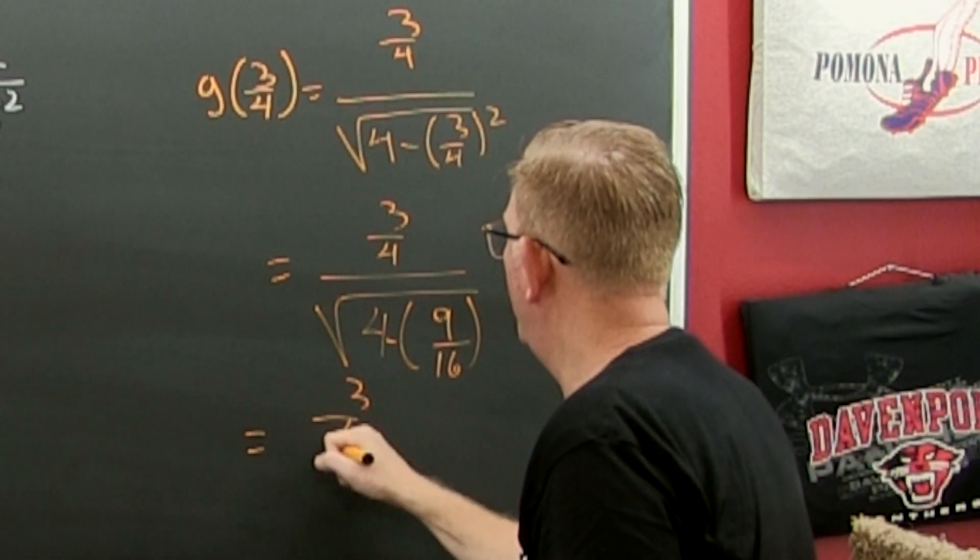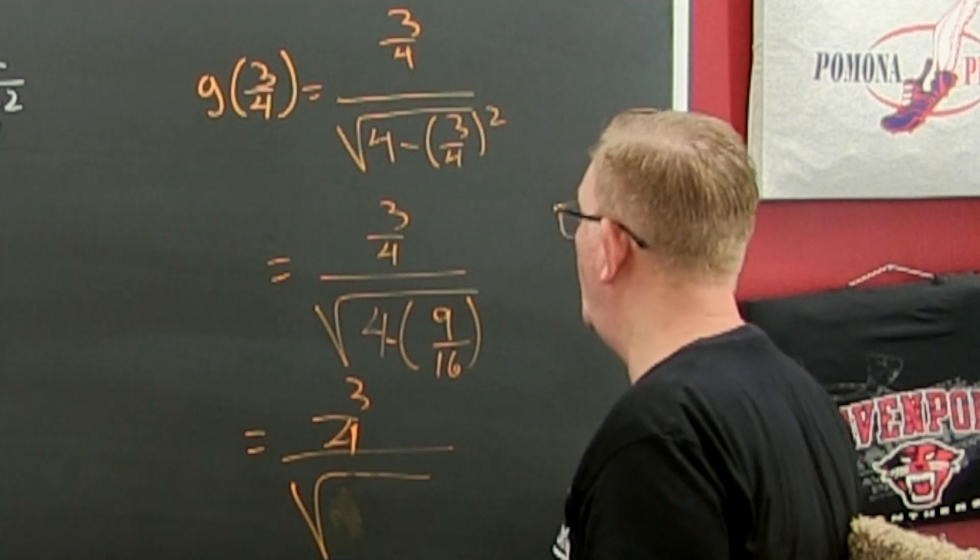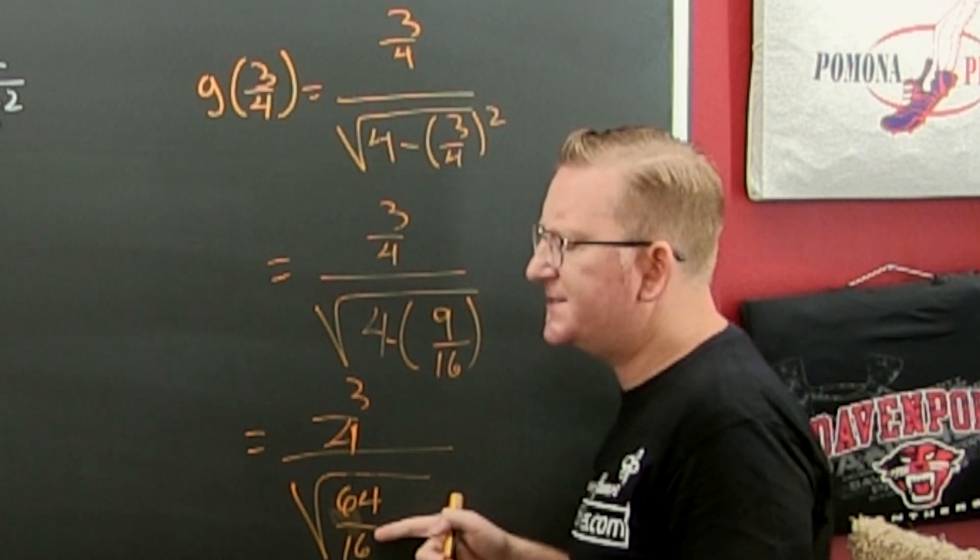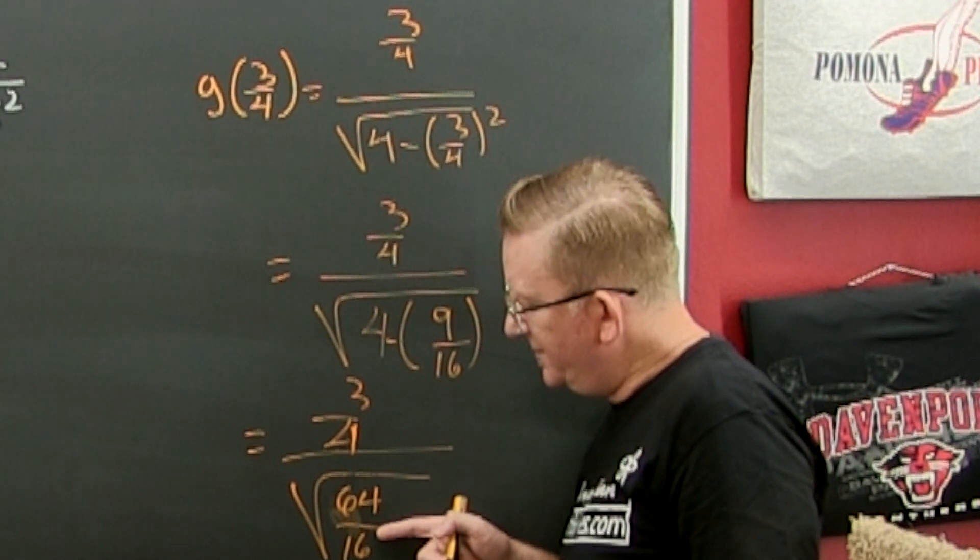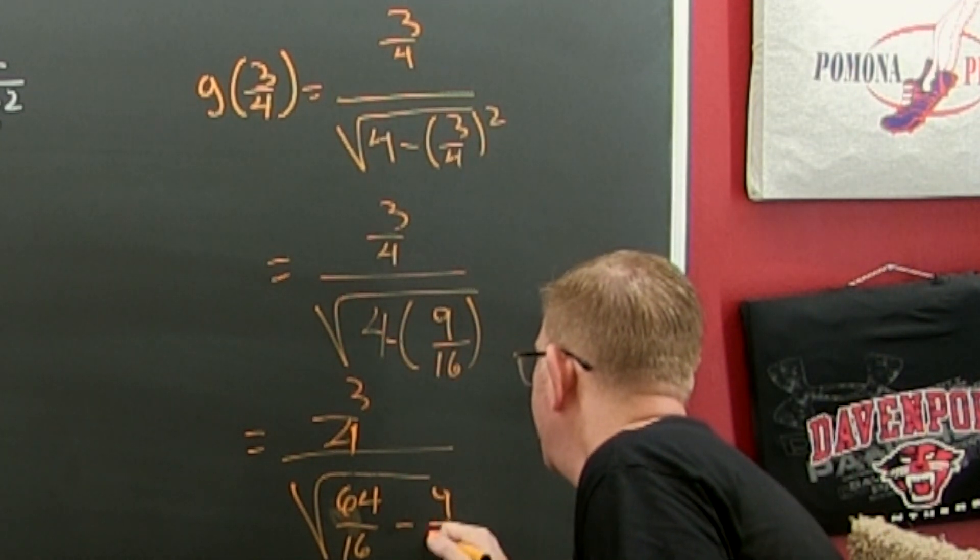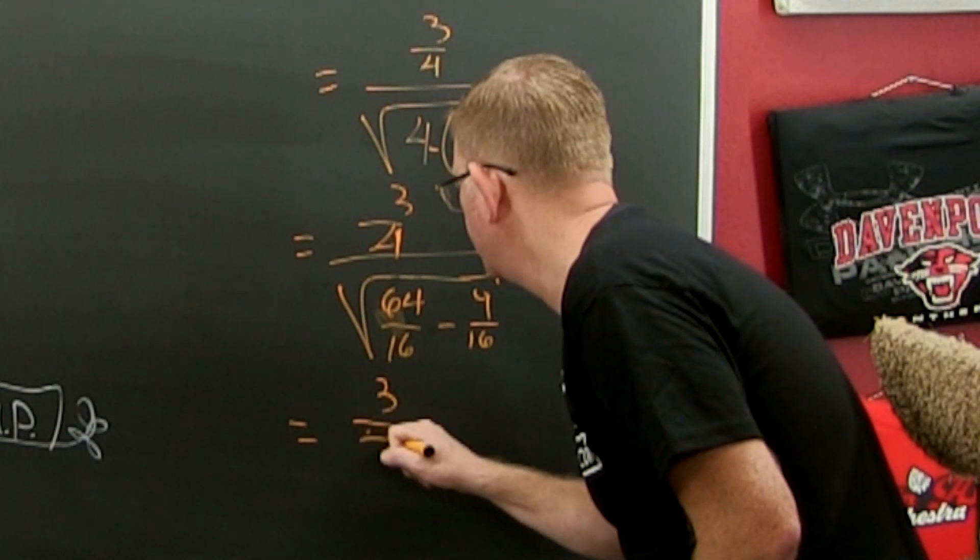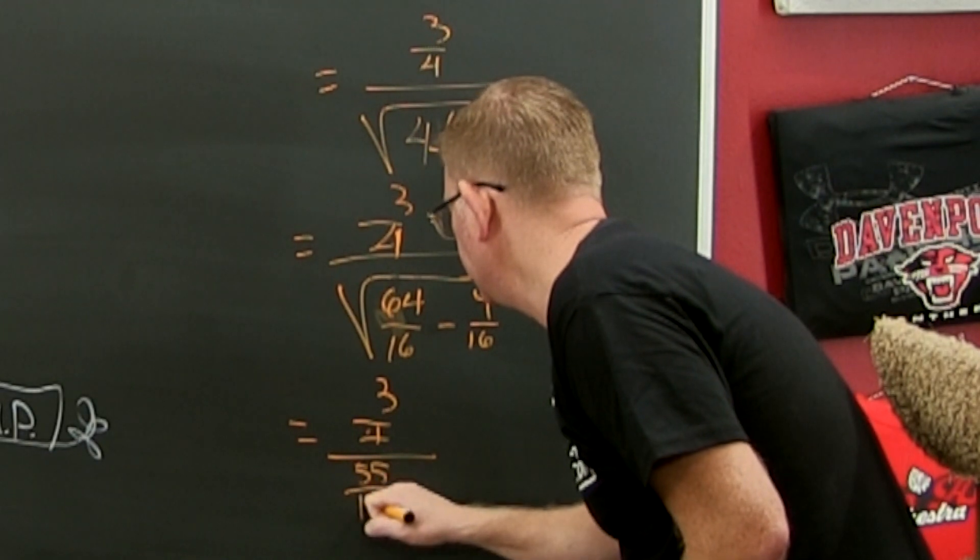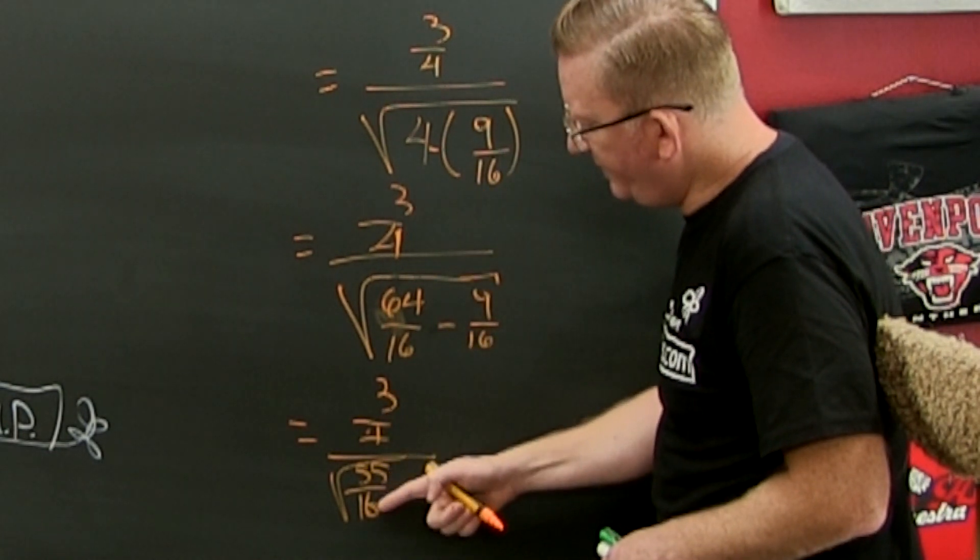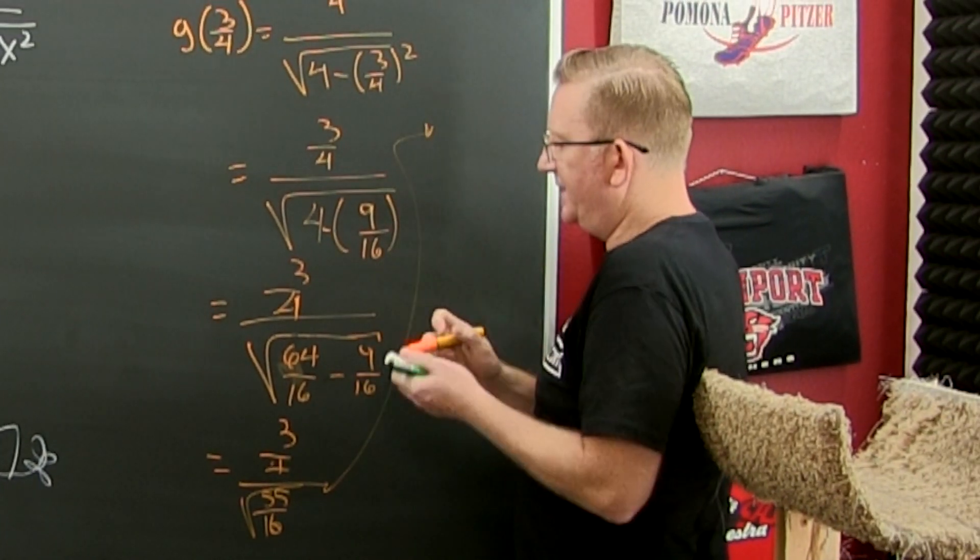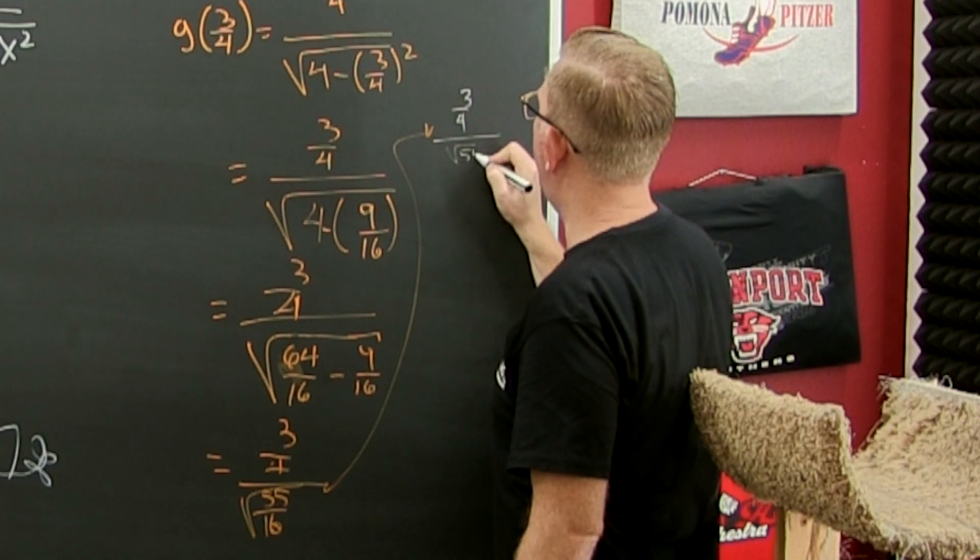So then this is three-fourths, and then that's divided by the square root of four. Let's call it sixty-four sixteenths. Yeah, that's the same as four minus nine sixteenths. Okay, Google, what's sixty-four minus nine? Sixty-four minus nine is fifty-five. All right, so now we got kind of a mess here, because we still have the three-fourths on top, and on the bottom we have fifty-five sixteenths. So that's three-fourths, and then that's divided by the square root of fifty-five over four.